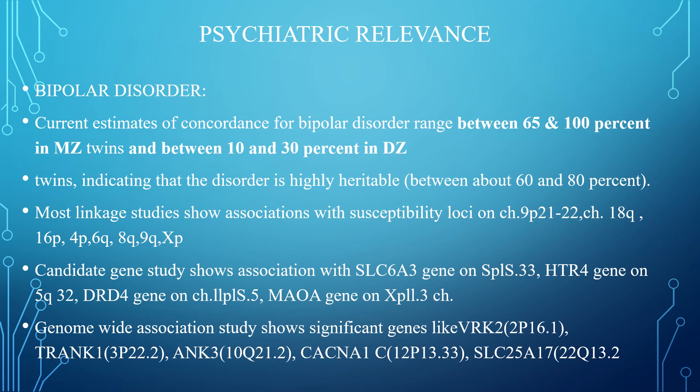Bipolar disorder: current estimates of concordance range between 65-100% in monozygotic twins and between 10-30% in dizygotic twins, indicating that the disorder is highly heritable between 60-80%. Most linkage studies show association with susceptibility loci on chromosomes 9P21, 22, 18Q, 16P, 4P, 6Q, 8Q, 9Q, and XP. Candidate gene study associations show SLC6A3 gene on 5P15.33, STR4 gene on 5Q32, DRD4 gene on chromosome 11, and MAOA gene on XP11.3. Genome-wide association studies show significant genes like VRK2, TRANK1, ANK3, CACNA1, and SLC25A17.